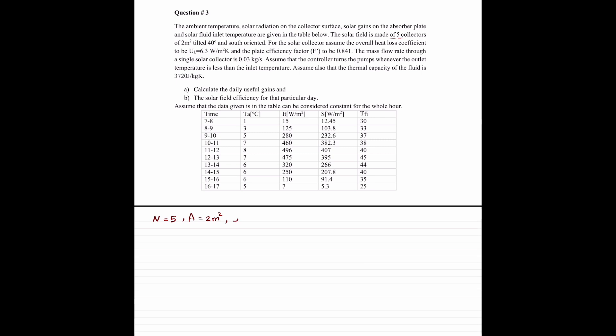And it's tilted, beta is equal to 40 degrees, south oriented, so it's facing south. We have a UL of 6.3 watts per meter squared, and we have an efficiency factor of 0.841. We have a mass flow rate of 0.03 kilograms per second.